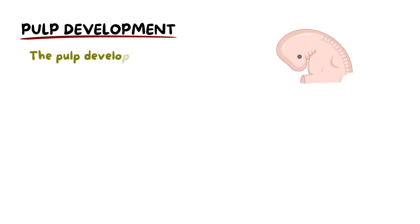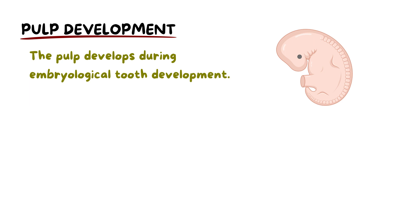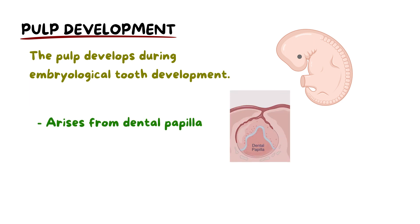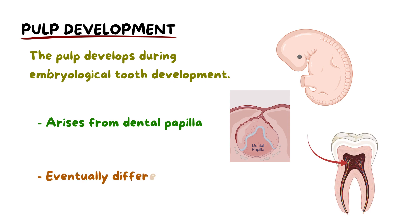The development of the dental pulp is a fascinating process that begins during embryological tooth development. The dental pulp arises from the dental papilla, which is part of the tooth germ. As the tooth continues to form, the dental pulp undergoes morphological changes and eventually differentiates into specialized cells and tissues found in the mature pulp.